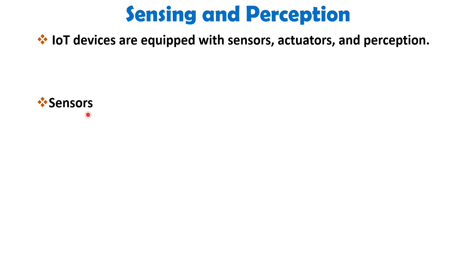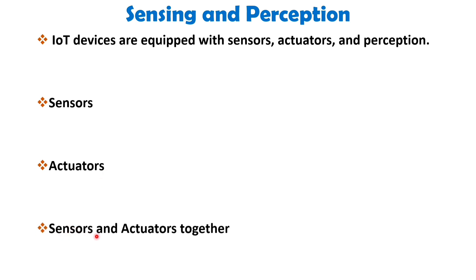Actuators are devices that can interact with the environment, such as turning on lights, opening or closing doors, or controlling the speed of a motor. In IoT systems, actuators are embedded into devices allowing them to perform actions based on data collected by sensors. Together, sensors and actuators allow IoT devices to collect data, process it and take action — enabling automation of processes such as home automation, energy management and predictive maintenance.